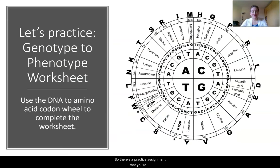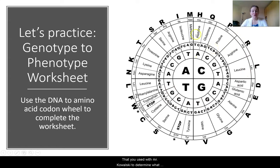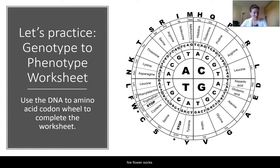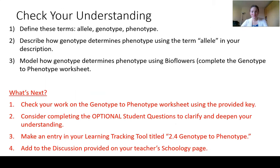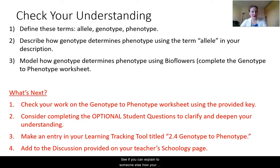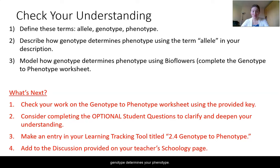There's a practice assignment — a genotype to phenotype worksheet — where you'll use the DNA wheel you used with Mr. Kowalki to determine what amino acid sequence your protein will be. I'll walk you through it again in our next video on the bioflower worksheet. Take a second to make sure you understand what an allele, genotype, and phenotype are, and see if you can explain to someone else how your genotype determines your phenotype, using the word allele.